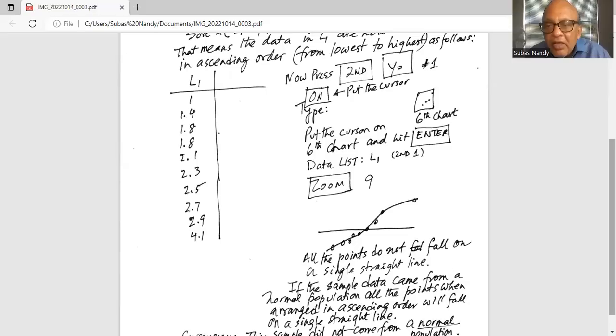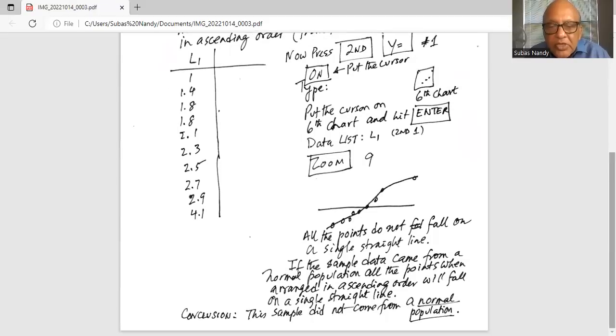If the sample data came from a normal population, all the points in this quantile plot, when arranged in ascending order, will fall on a single straight line. Since the points in the quantile plot did not fall on a single straight line, this sample did not come from a normal population.